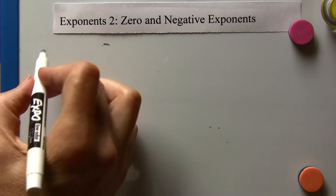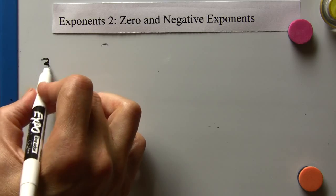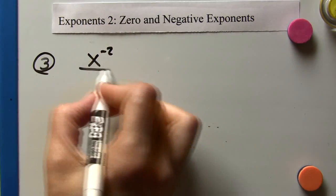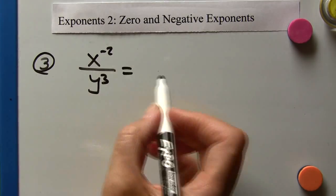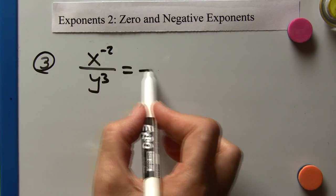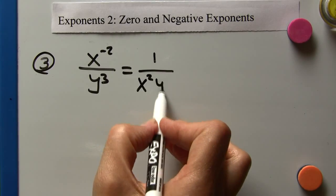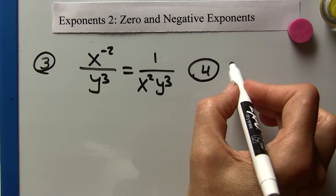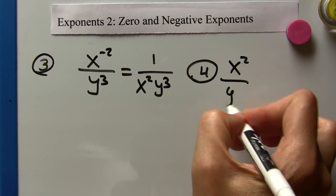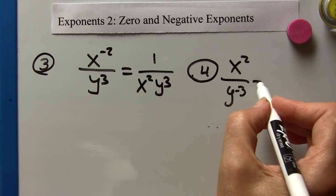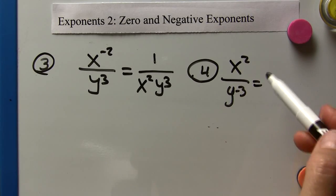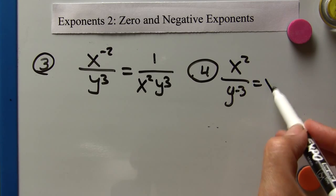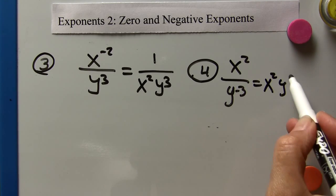Another example: x to the negative two over y cubed. Since x to the negative two is in the numerator, we put it in the denominator, giving one over x squared y cubed. And if we have x squared y to the negative three — a negative exponent in the denominator — we put it in the numerator. This becomes x squared y cubed.